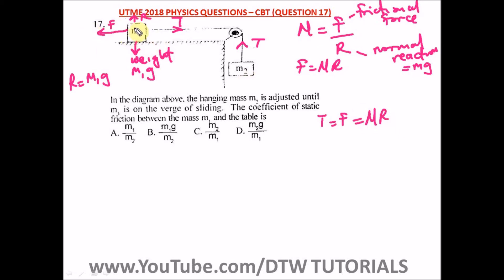And where R, that's the normal reaction acting on this mass M1, is M1g. So F, that's the first tension here, is equal to mu M1g.